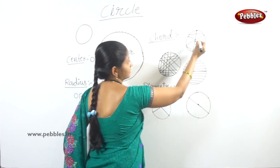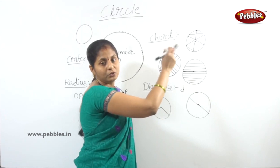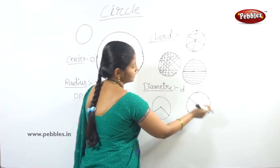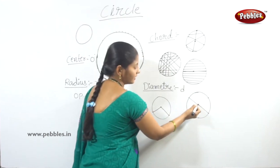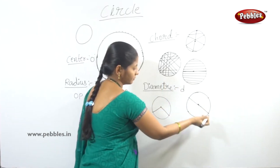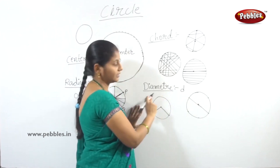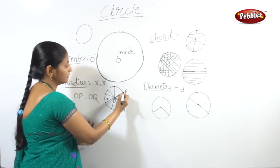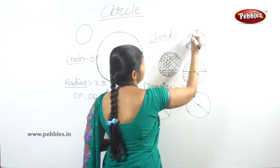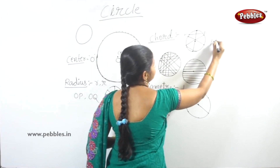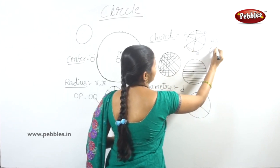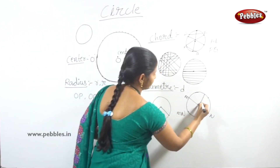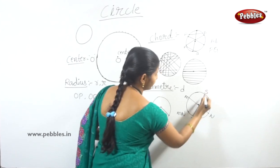A line segment joining any two points on the circle is called a chord. For example, AB is a chord, PQ is a chord. A line segment joining two points passing through the center is the diameter. For example, MN is a diameter and ST is a diameter.